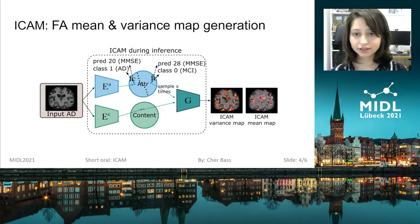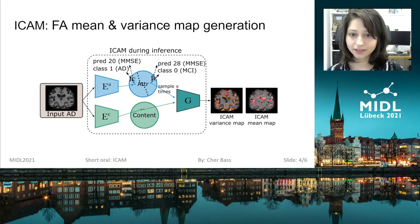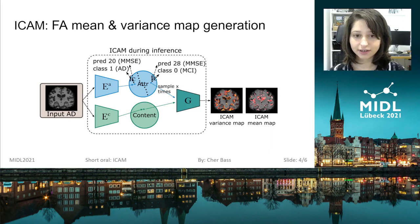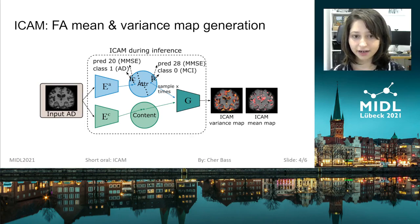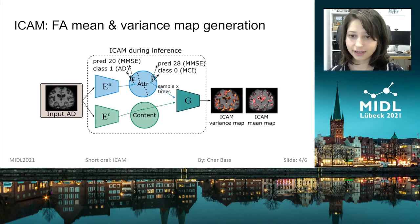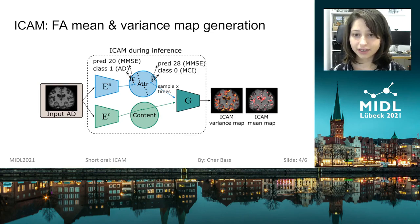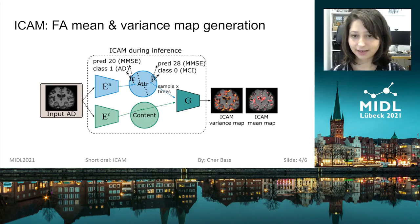During inference, in addition to translating between two subjects, you can also encode an image into the content space and then achieve translation by sampling the attribute latent space multiple times. Because we have the linear layers which do prediction, we can reject samples which are in the incorrect class and achieve translation that way. We can then also generate variance and mean maps by taking the average and variance across these feature vectors, which would highlight features related to the class.